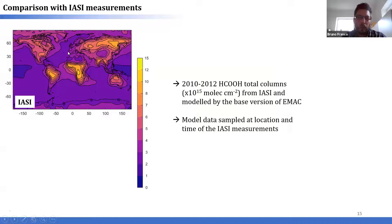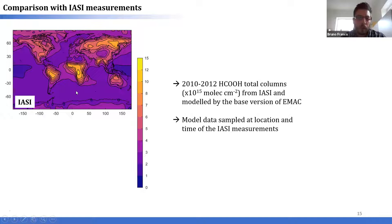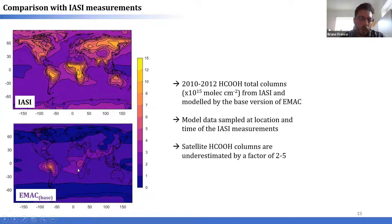This is now the global distribution of formic acid total columns derived from three years of IASI measurements. You can immediately observe strong contributions from continental source regions, for example within the tropics but also in the northern hemisphere, and formic acid columns remain quite high in remote areas such as over the oceans. For the comparison with model data, we sampled the model data at the location and time of the IASI measurements to avoid sampling biases. Here is the global distribution simulated by the base model simulation, and again the model completely underpredicts formic acid total columns at the global scale compared to IASI.